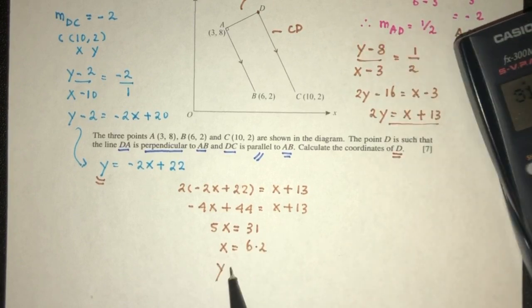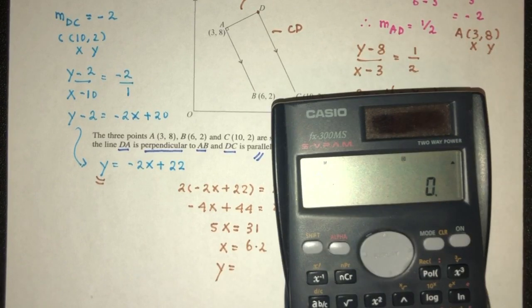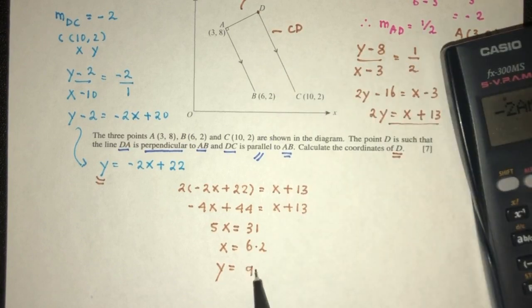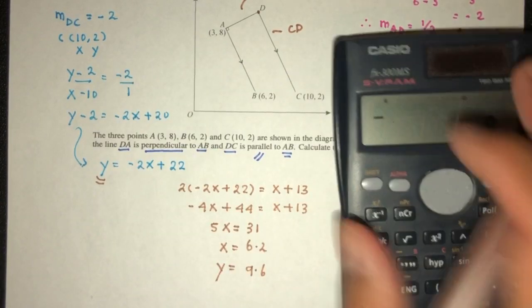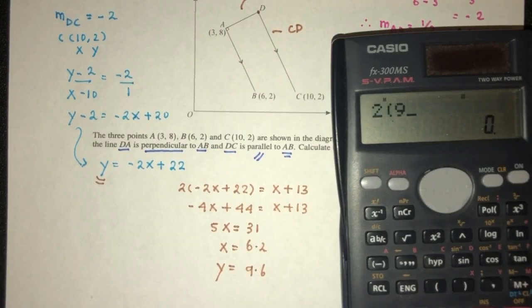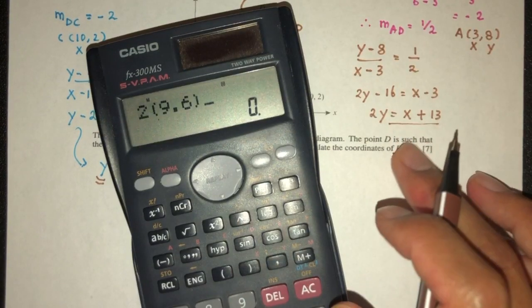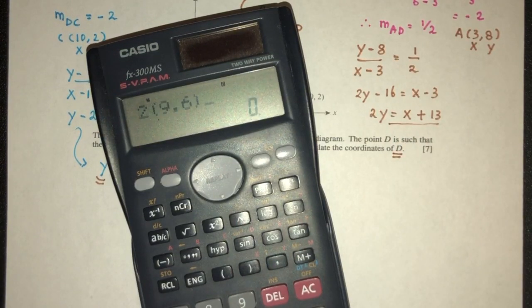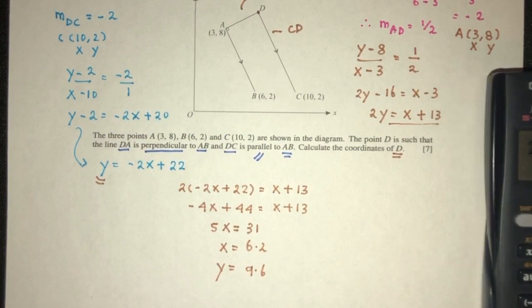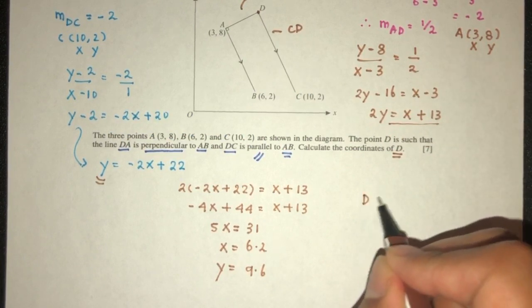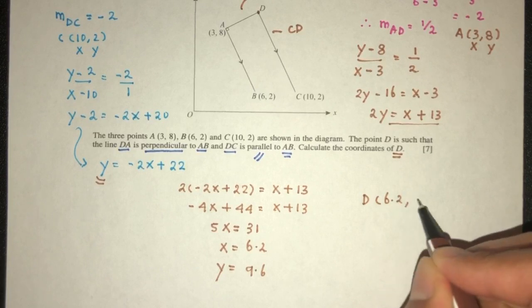And Y will be the value of minus 2 times 6.2 plus 22, that will be 9.6. Let me double check if that is okay or not. Let me put this back in this equation. 2 times Y, 9.6, is this value. Now, if you have 6.2 plus 13, that is also the same value. So it seems to be fine. So D will be the point 6.2 and 9.6.